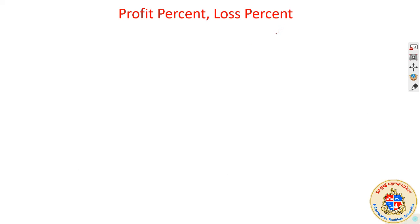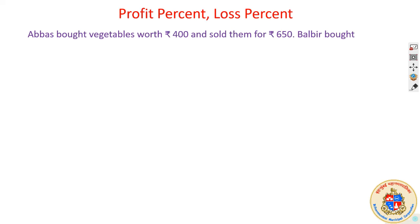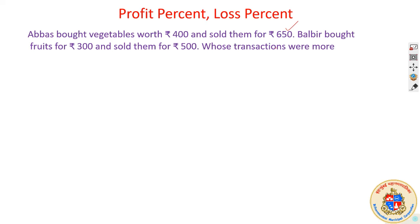Here is a question to understand practically from a real-time situation. Abbas bought vegetables worth Rs. 400 and sold them at Rs. 650. Balbir bought fruits for Rs. 300 and sold them at Rs. 500. So both have bought something and sold. Whose transactions were more profitable?